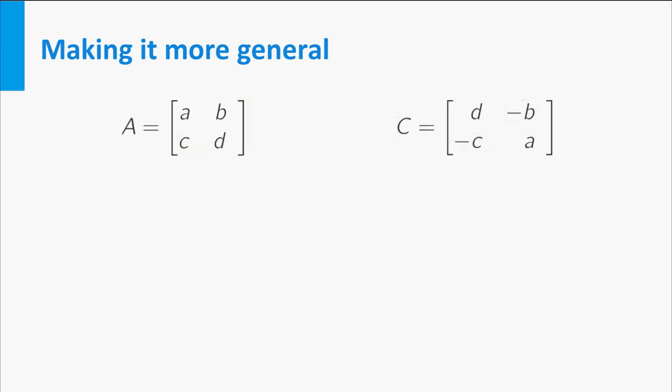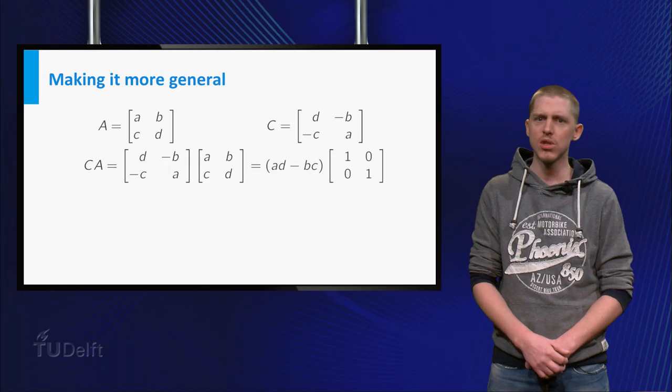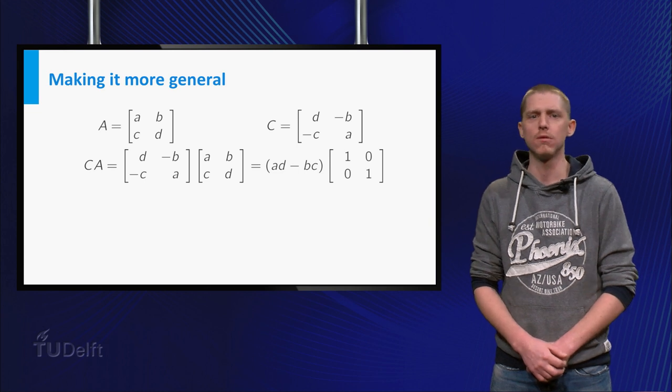With A given by a, b, c, d, and C by d, minus b, minus c, a, we can do the multiplication of C and A and arrive at a diagonal matrix with a times d minus b times c on the diagonal. So we still do not know whether A is invertible.